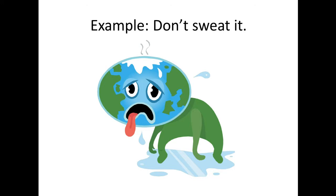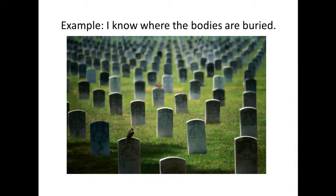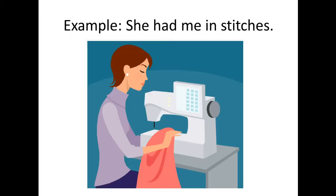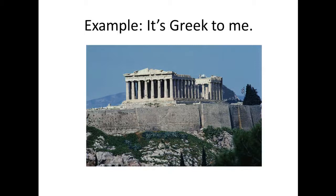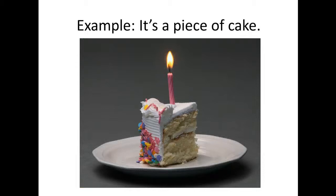If we say to someone "don't sweat it," we're saying don't worry about it. "Keep your shirt on" means be patient — the person isn't literally trying to take a shirt off. "I know where the bodies are buried" — there are no bodies; it means you know the secrets. "She had me in stitches" has nothing to do with sewing; it means she made me laugh. "It's Greek to me" — I'm not talking about Greece; it means I don't understand. "It costs an arm and a leg" — not literally; it just means it's expensive. "A piece of cake" means it's easy. You can see how confusing these idioms would be if you didn't know them — there's no way to figure them out, you just have to know them.